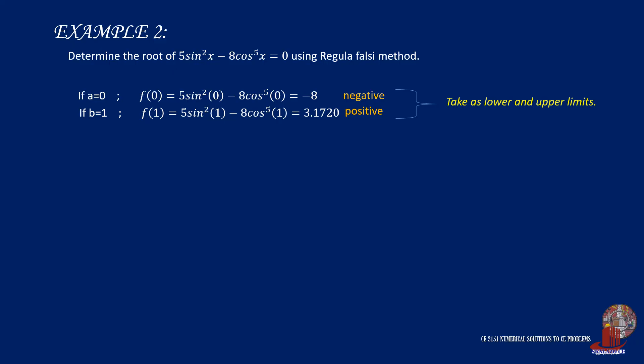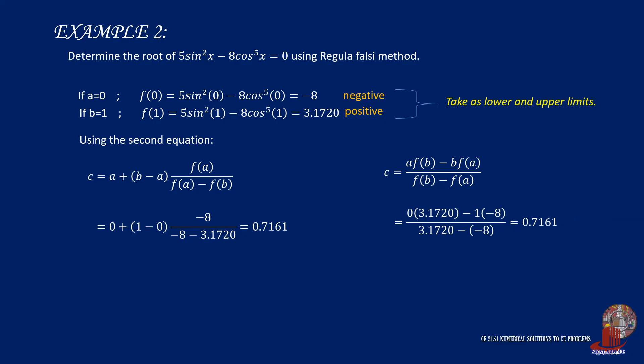Since we already have different signs in the function, we can use the assumed limits as the initial values in the bracket. If we use the formula derived, we have 0.7161. Continue by taking the function of c, and the value turns out to be positive 0.2002. Before proceeding with the solution, let's check if we arrive at the same approximate when we use the second formula. The formula being c is equal to a plus (b - a) times the quantity of function of a all over the difference of function of a with b. By plugging the values, we would get 0.7161, which is the same value we arrived at earlier with the other formula. And this value will still yield the same function of c as positive 0.2002.